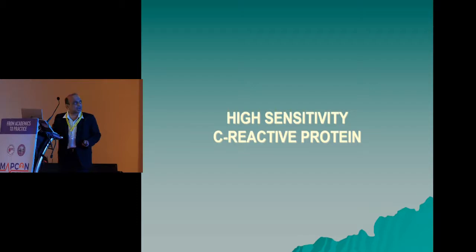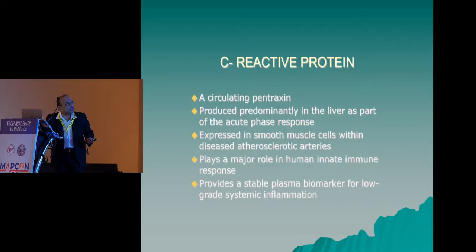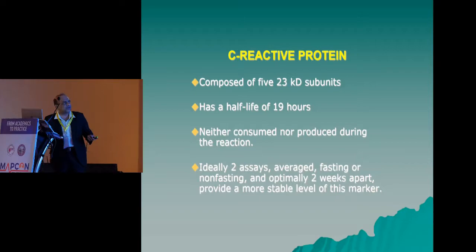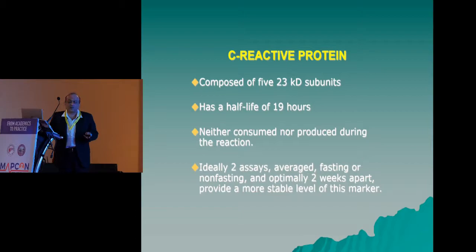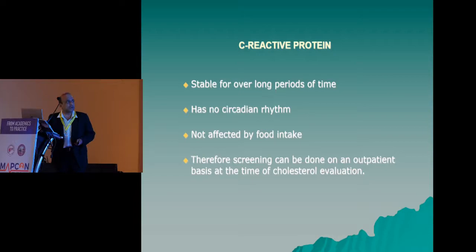Coming to the next biomarker, HSCRP — high-sensitive C-reactive protein. This is a circulating pentraxin produced predominantly in the liver as part of the acute phase response, and it is expressed in the smooth muscles of atherosclerotic arteries. It plays a role in immune response and is a stable biomarker for low-grade inflammation. Its half-life is 19 hours, it is neither consumed nor produced during the reaction, and ideally you need to measure it two weeks apart with two assays to know the stable value.